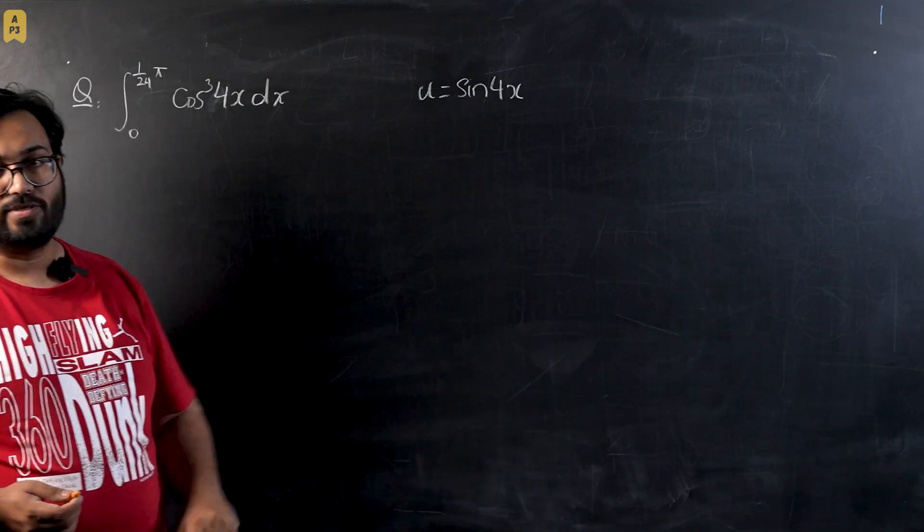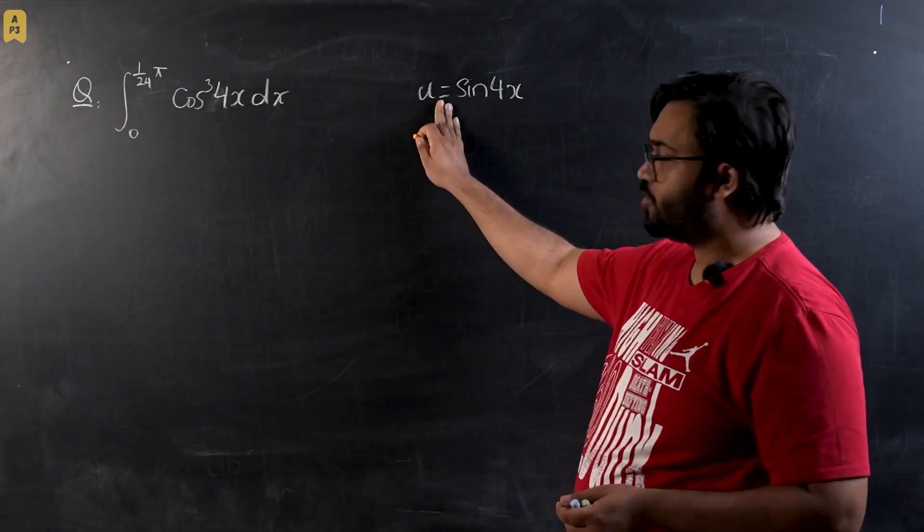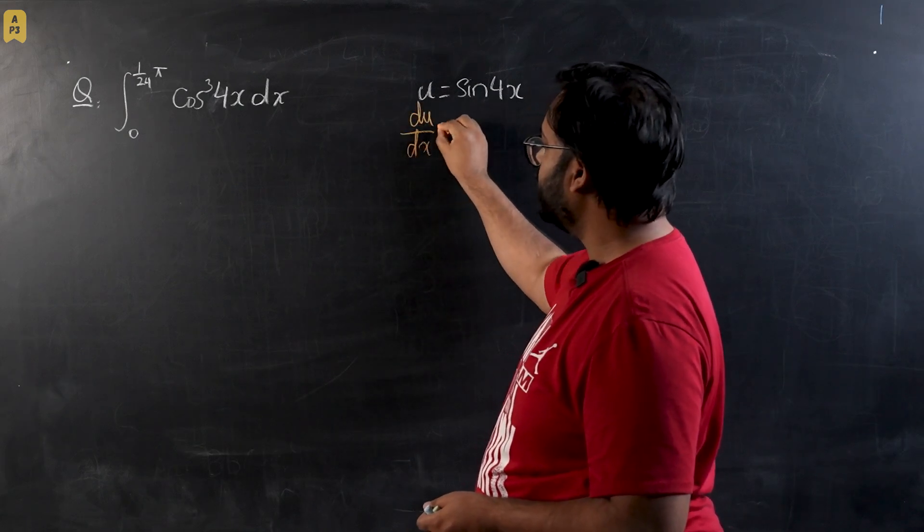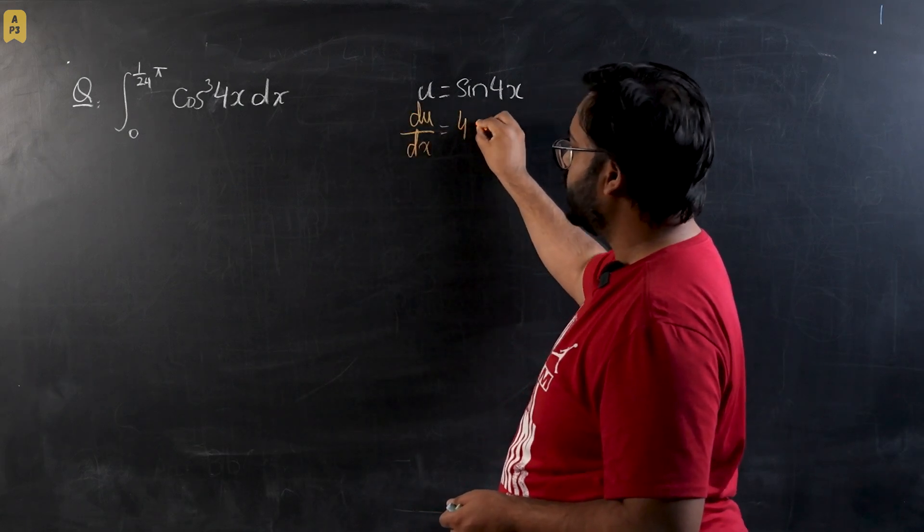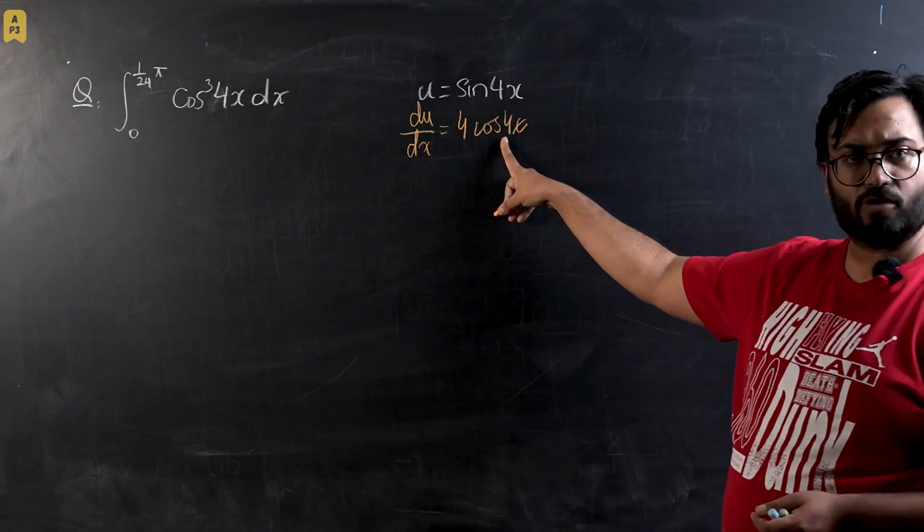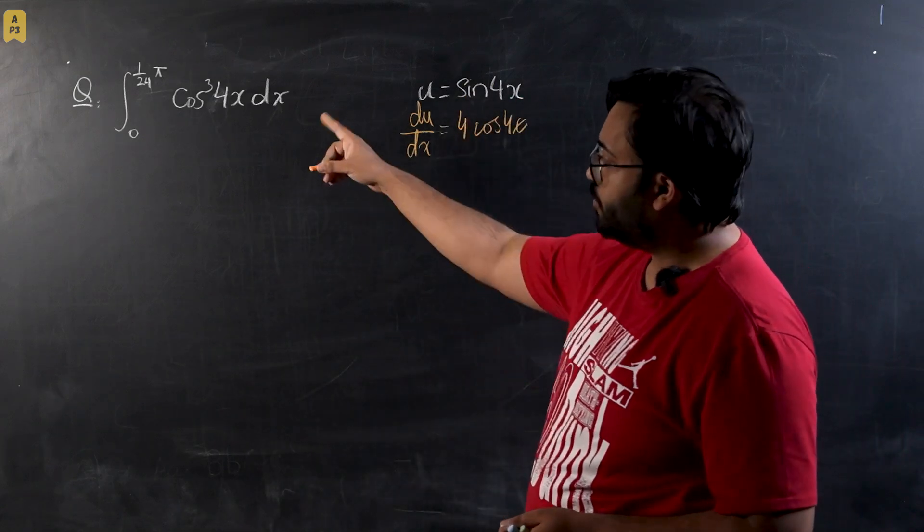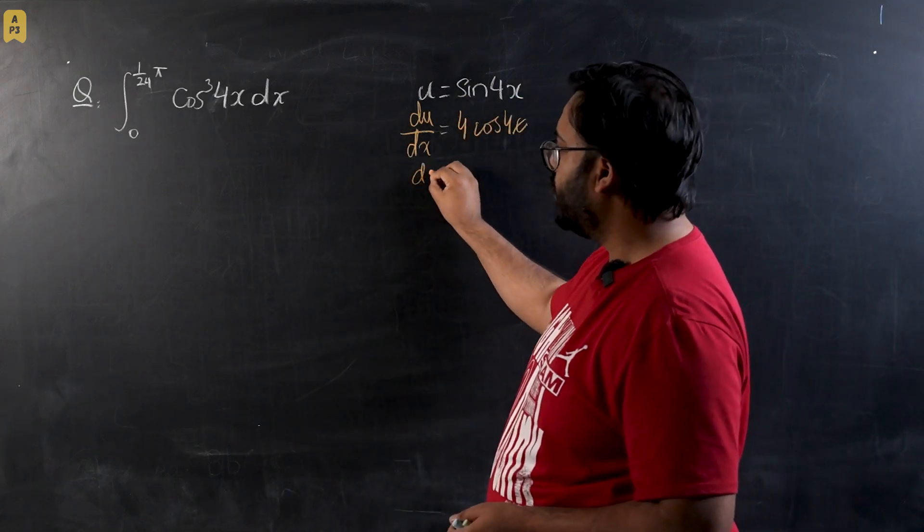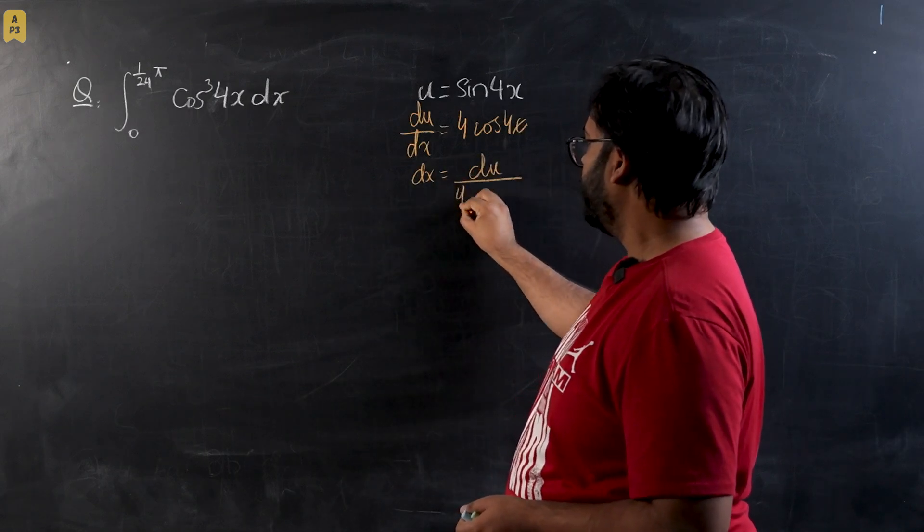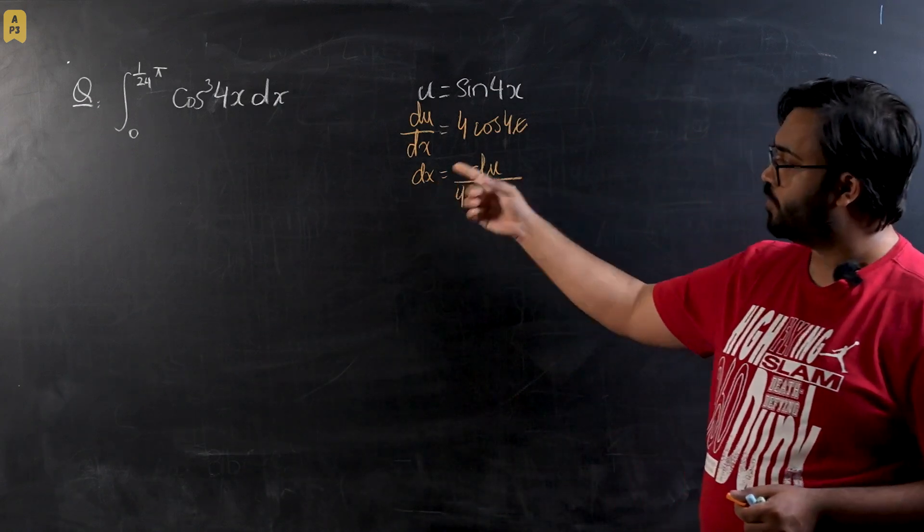As we all know, we are going to start with differentiating the substitution. So du/dx will give us 4 cos 4x, so sin 4x would become cos 4x and the differentiation of 4x would be 4. Now I am going to make dx the subject, so dx will be equal to du/(4 cos 4x). So this will be the value of dx that we are going to substitute.